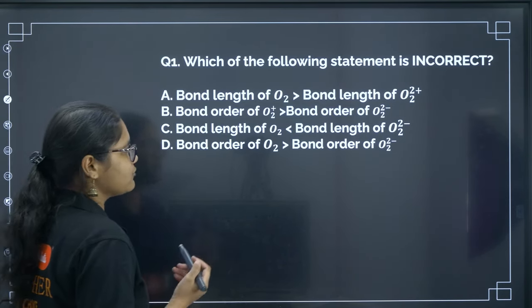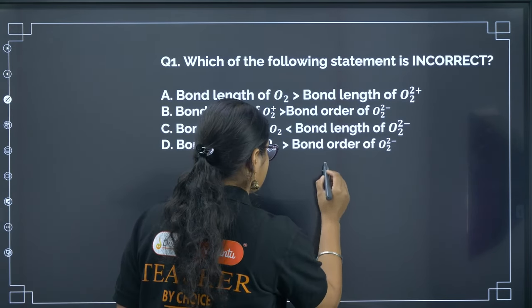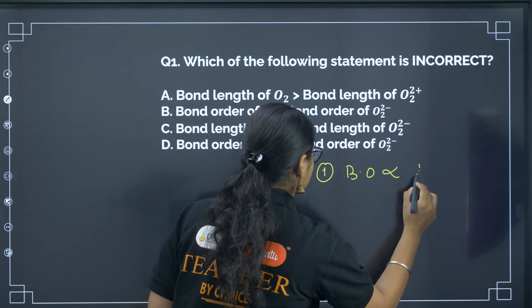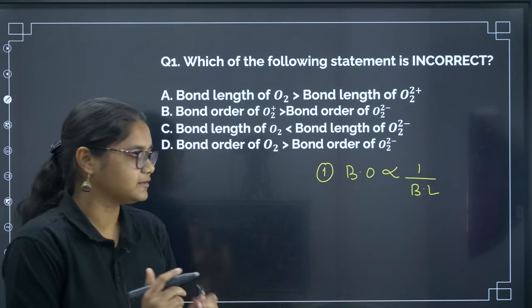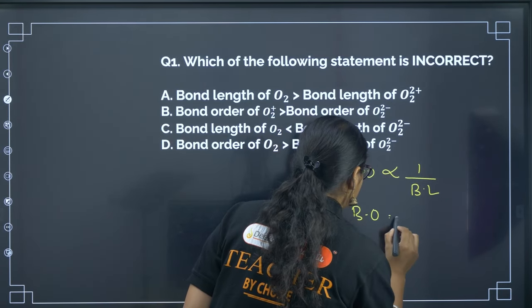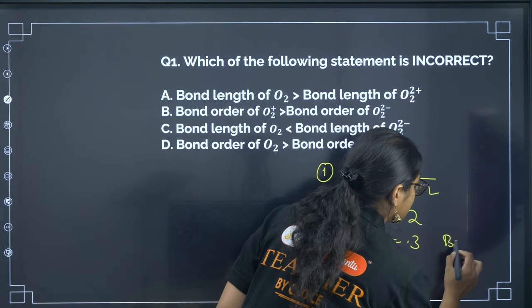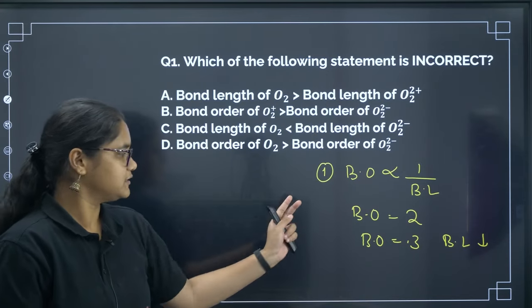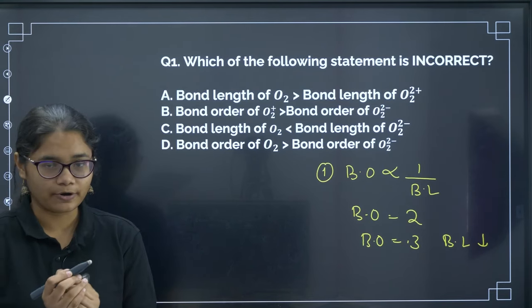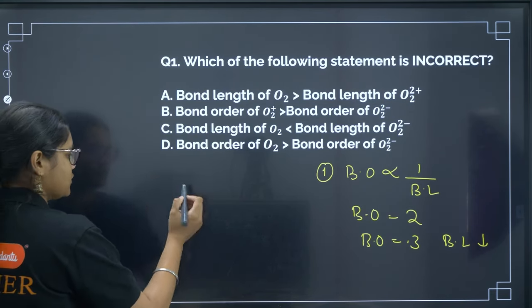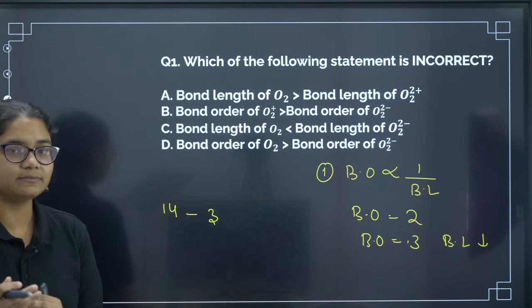First question: which of the following statements is incorrect? The statements are about bond order and bond length. The first thing to remember is bond order is inversely proportional to bond length. If bond order is less — for example bond order of 2 versus bond order of 3 — where bond order is more, bond length will be less. Now, a trick to find bond order: if the number of electrons is 14, bond order is 3; increase by 1 and bond order decreases by half.